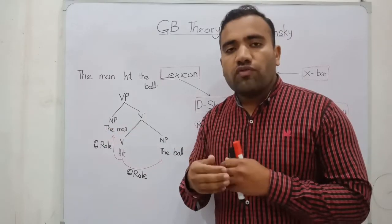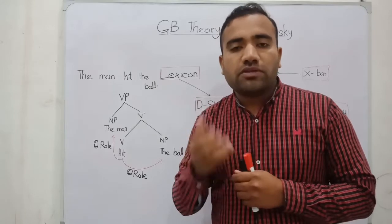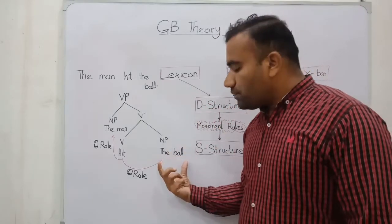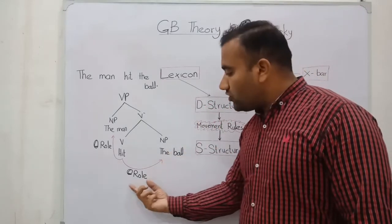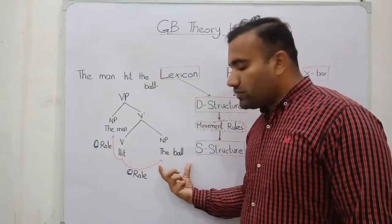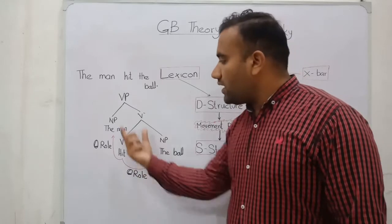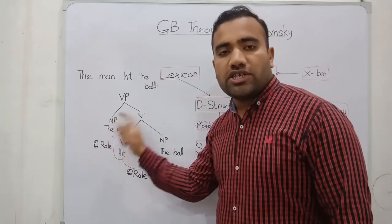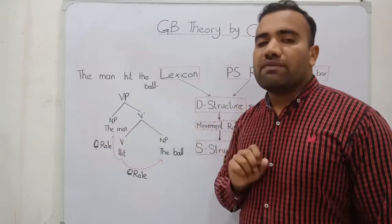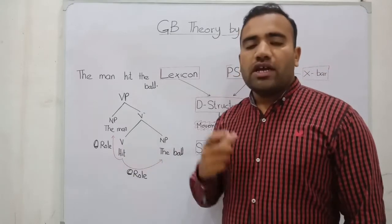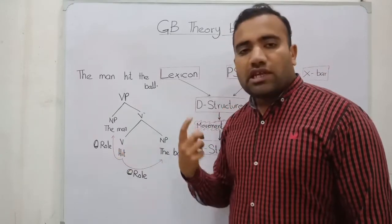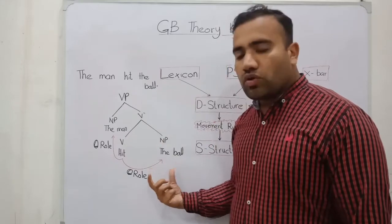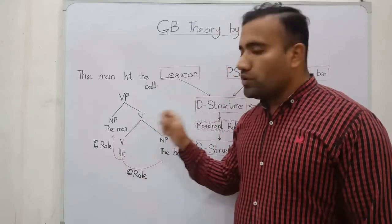On that position we assign the different types of roles. At this place we assign the theme role, and at this specifier position we assign the agent's role. Here we have the crucial item that is the V. Actually V licenses the theta role within the local domain.